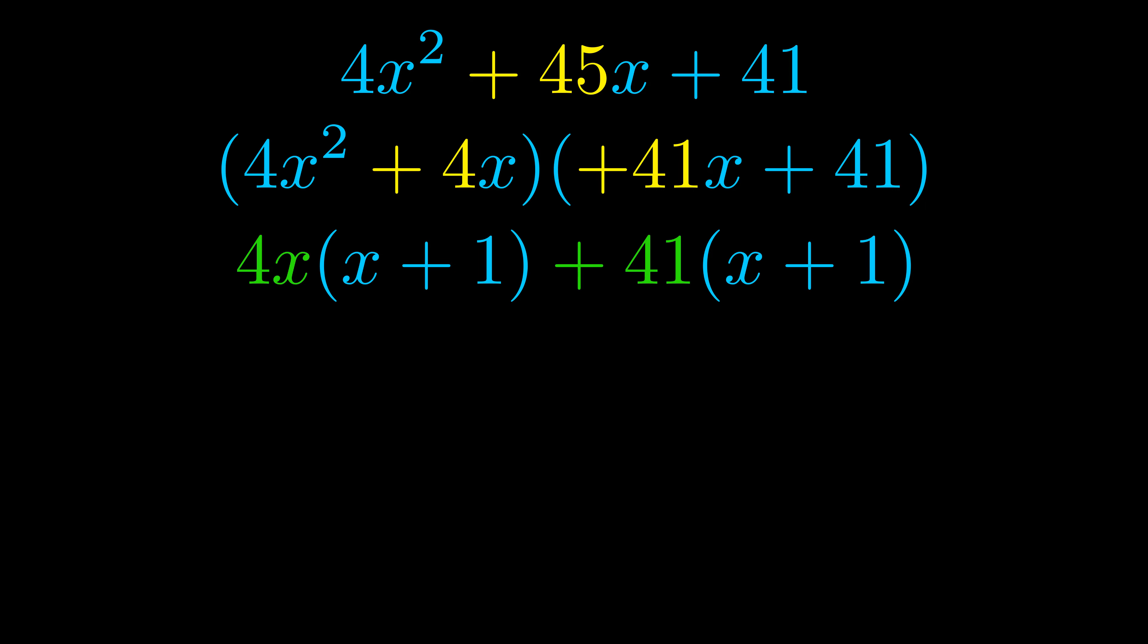Notice also how what remains inside of the parentheses is the same in both cases. The blue values are the same. Those blue values will become one of our factors and we will combine the two green values, the GCFs that we pulled out, to get the other one. And that is our fully factored equation.